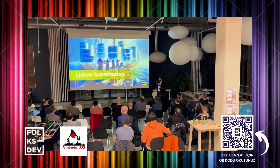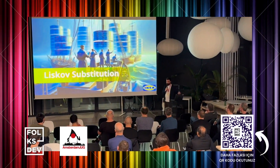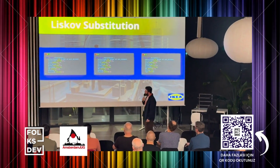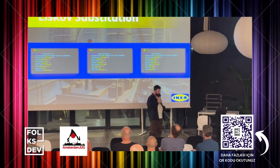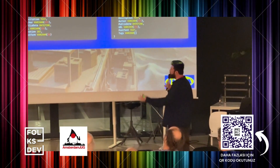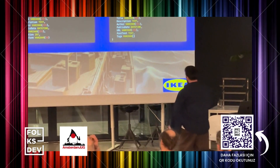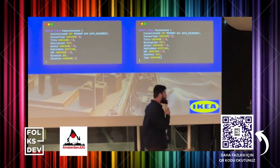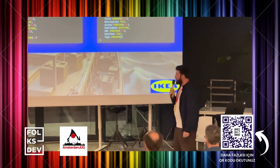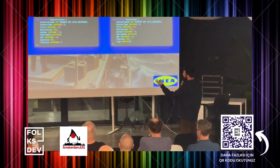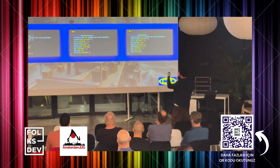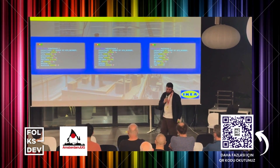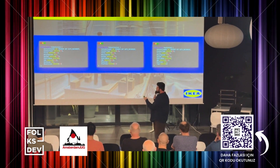The open-closed principle encourages us to design data structures that are open to expansion but closed to modification. This means we can add new data types or categories without altering the existing data storage. For example, if you have a content-related database with three different kinds of content tables — one is video content, another is podcast, and the other is post — you can see all of them have common fields like content item ID, content type, description, and so on, but they also have specific fields unique to each.